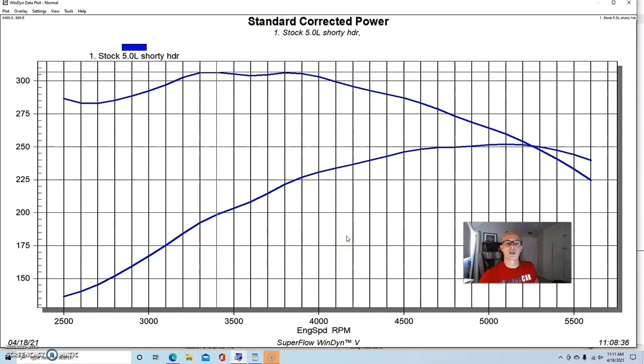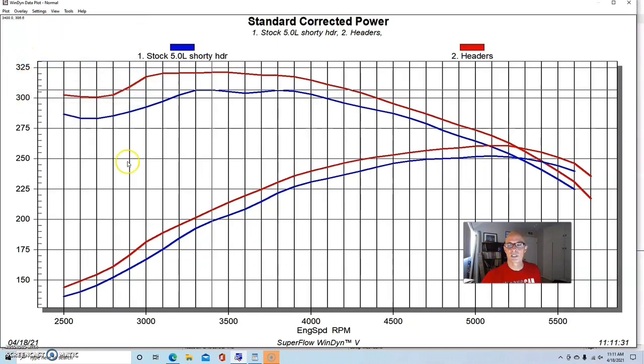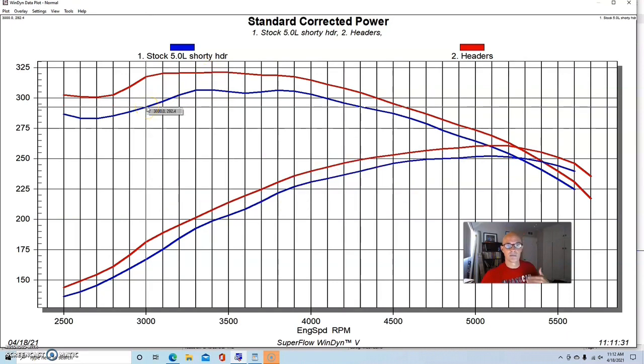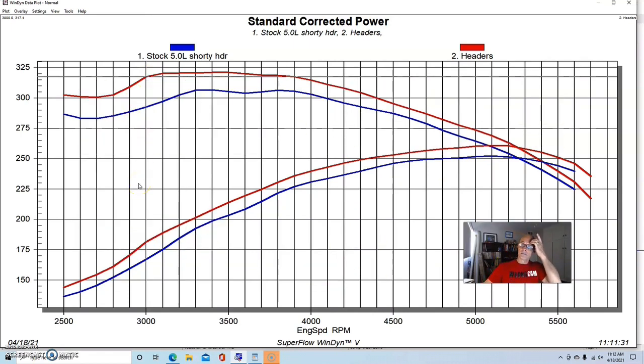So the first thing that we did like with the small block Chevy is we installed a set of long tube headers. We put a set of inch and three quarter long tube Hooker Super Comp headers for a Fox chassis application run also with three inch collector extensions. The shorty headers were also run with two and a half inch collector extensions. So run with the long tube header upgrade, the power output, as you can see jumped up, and this is kind of more what we would expect, even on this mild combination. The power output jumped to 261 horsepower, peak torque was up to 321 foot pounds. And here at 3000 RPM, the torque was up from 292 to 317, more like 25 foot pounds. And that's kind of what we normally see with a long tube header upgrade. That's why they're so popular, especially even for mild applications. So upgrade the exhaust with headers and long tube if you guys can do that.